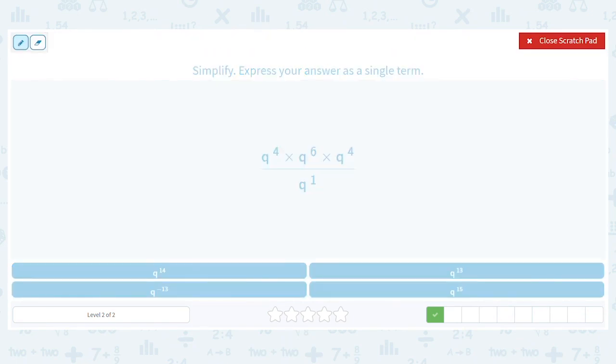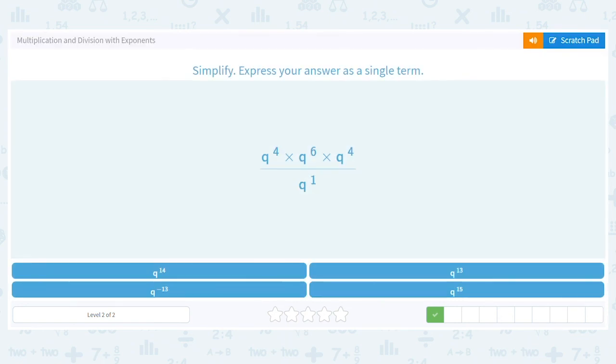We've got four plus six plus four minus one. So we've got ten, fourteen, thirteen. So we should end up with Q to the thirteenth.